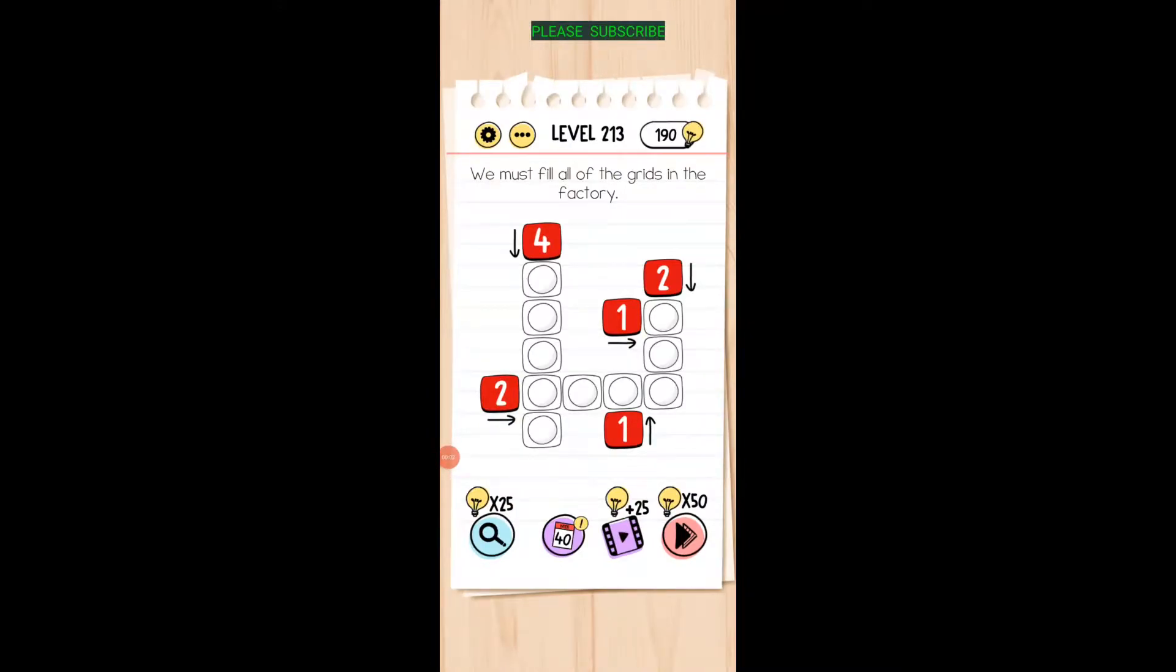Looks like that's about it. So two, four, five, six, seven, eight, nine, ten, eleven, twelve teeth. We must fill all of the grids in the factory.